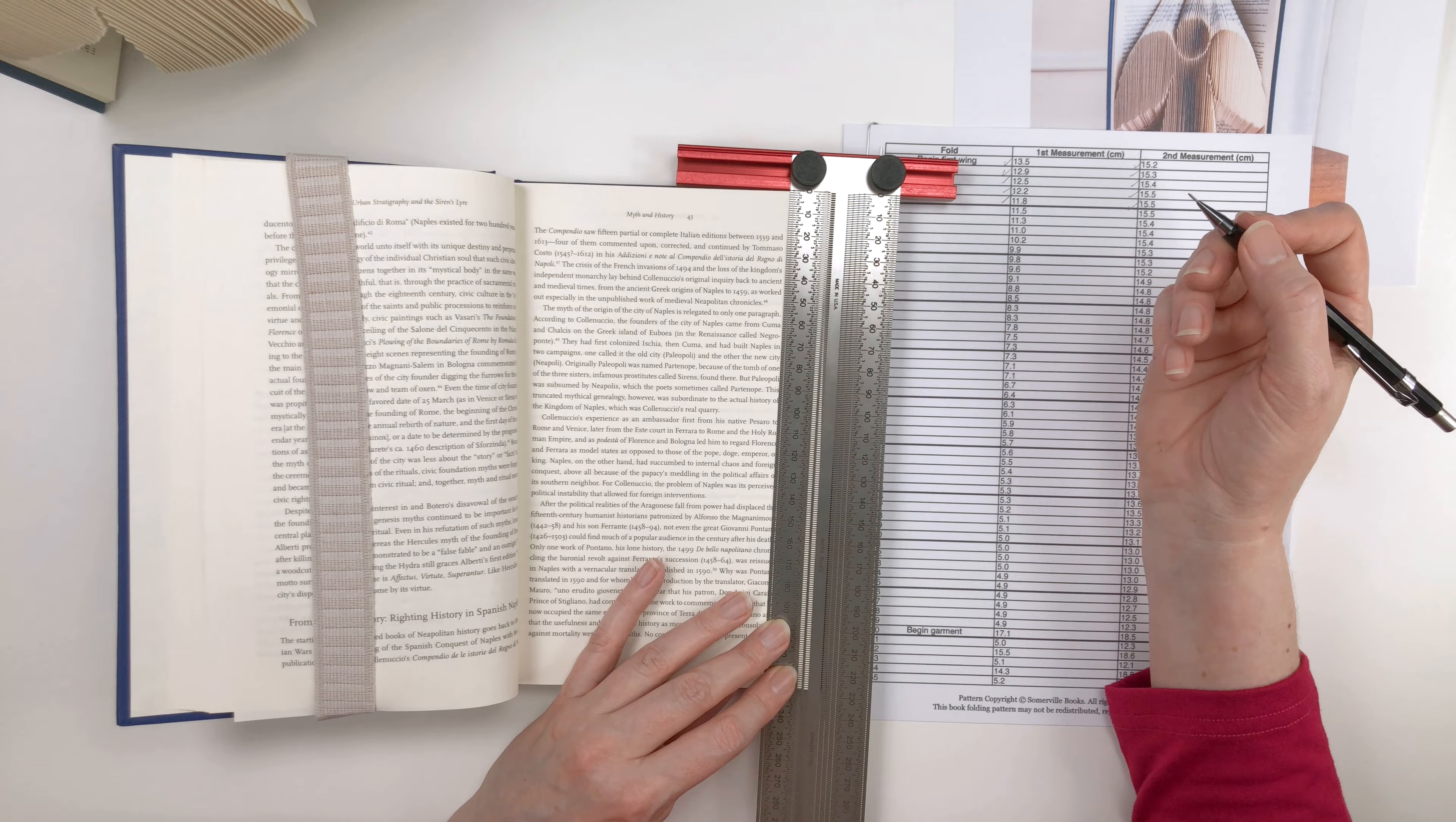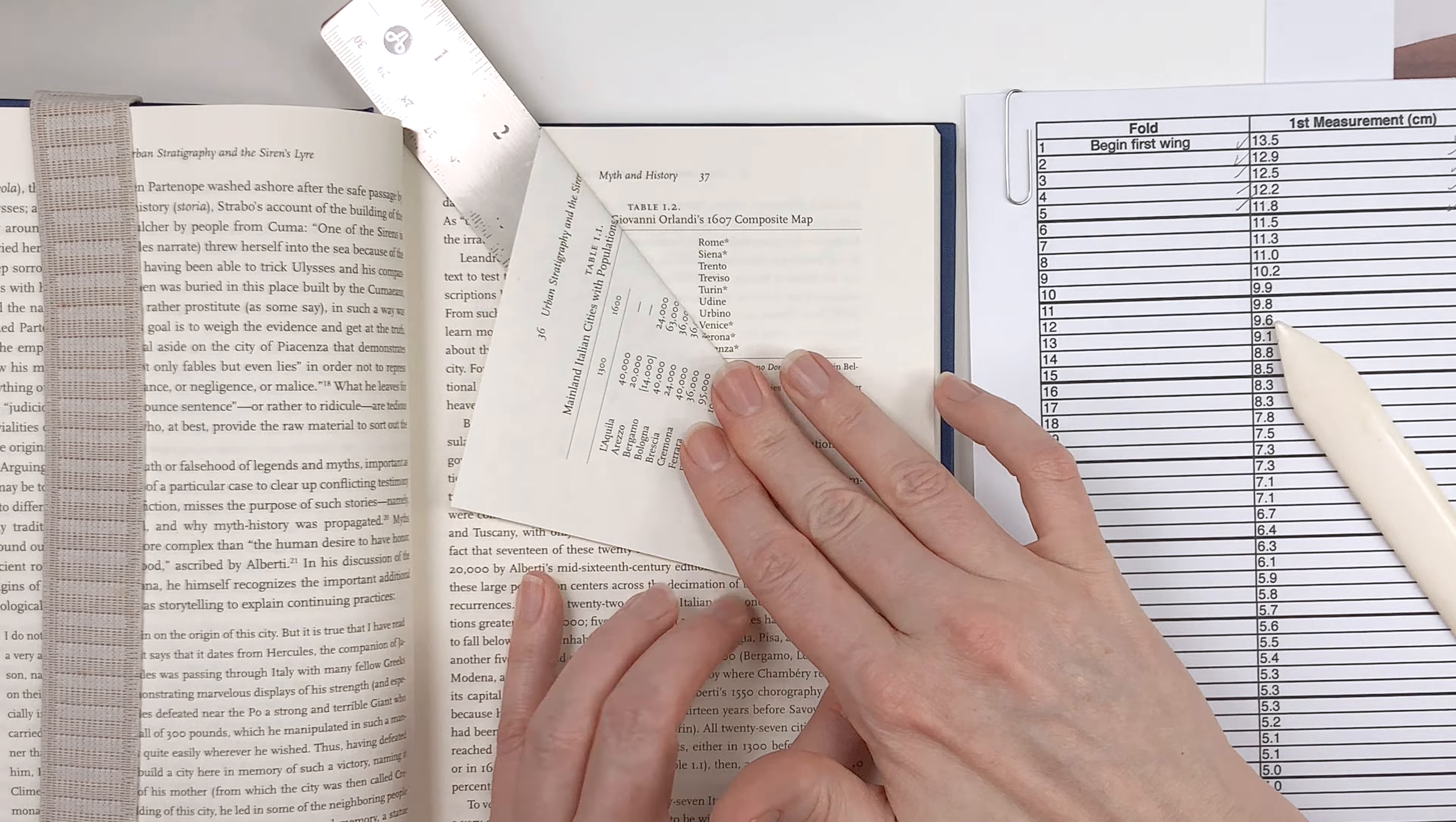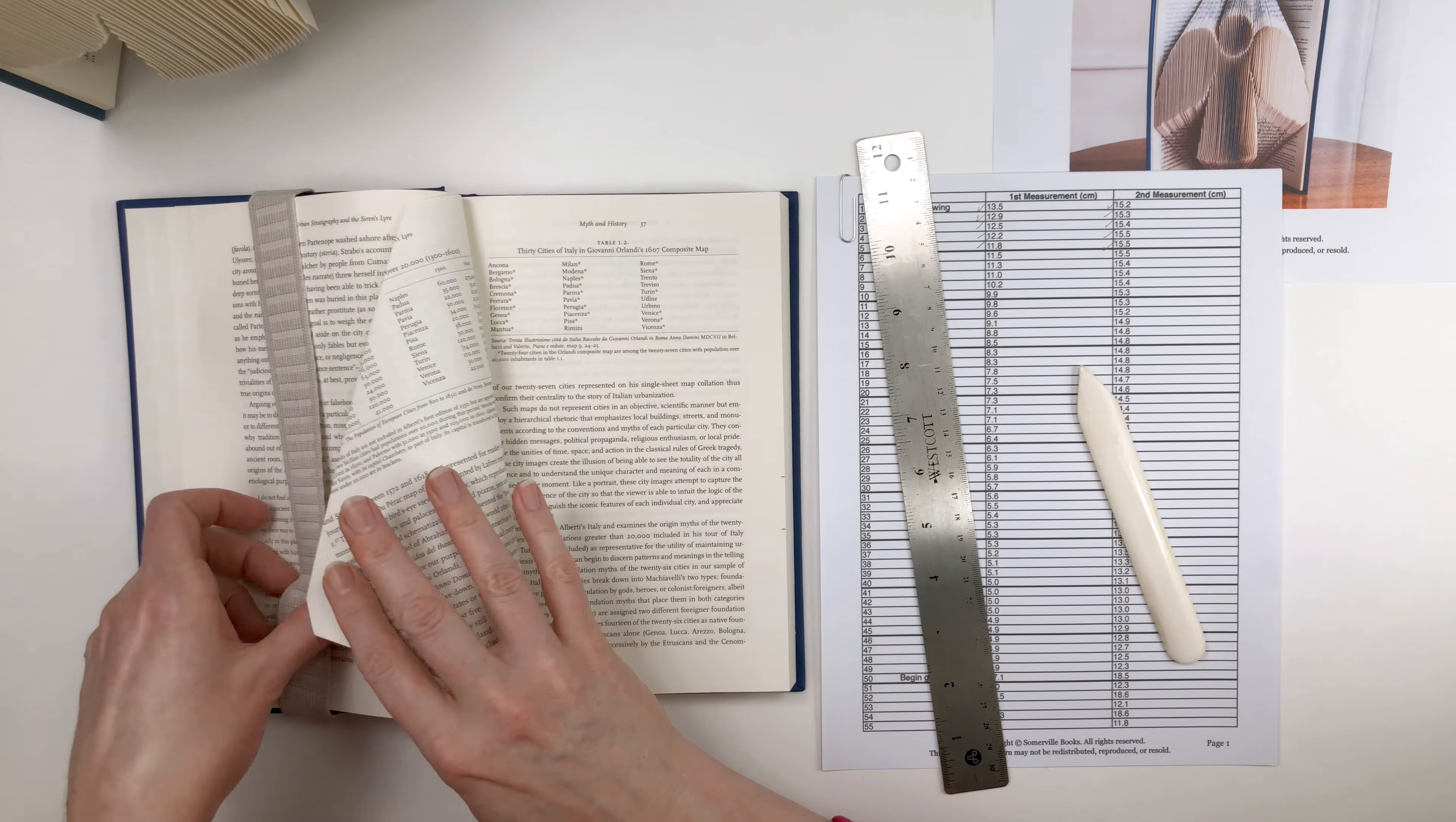And we've finished marking folds one through five. So now let's go back and fold those. For folding, I like to use this thin metal ruler made by Westcott. It's got nice cork on the back so it doesn't slip on the paper. And it's nice and thin and flexible. So I put one edge against the spine and then the opposite edge on that first mark of fold number one, which was 13.5. And I also like to use a bone folder to get a nice crisp edge on the fold like that. And the second mark, 15.2.